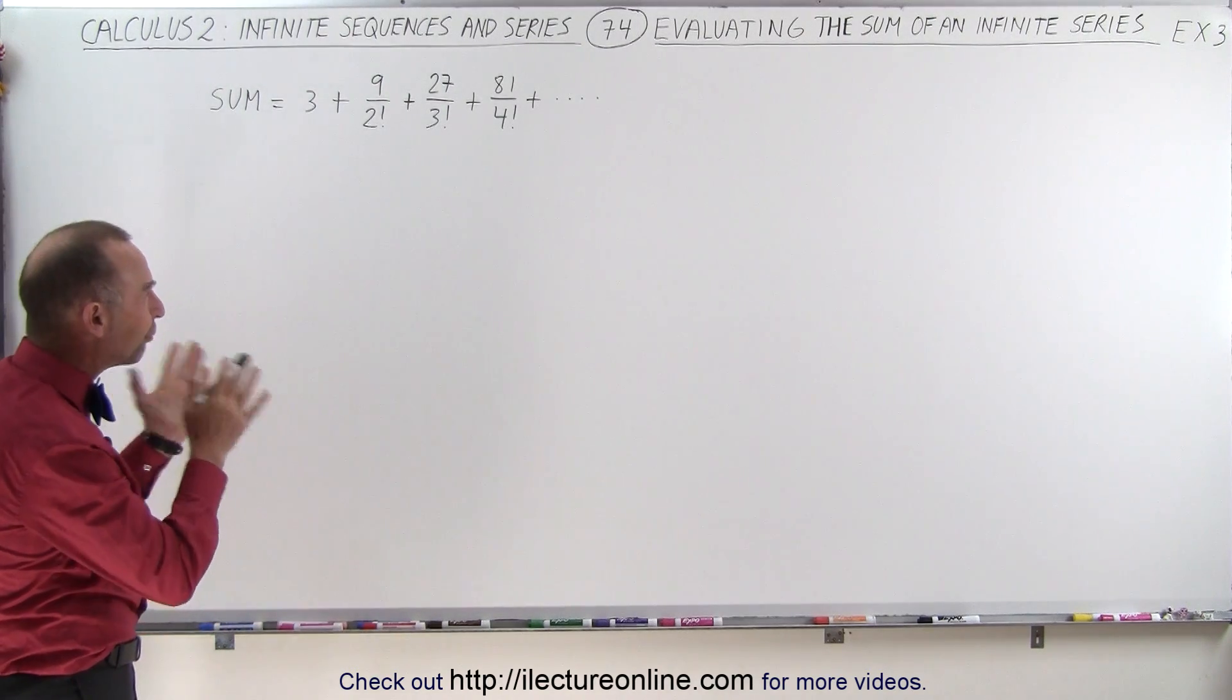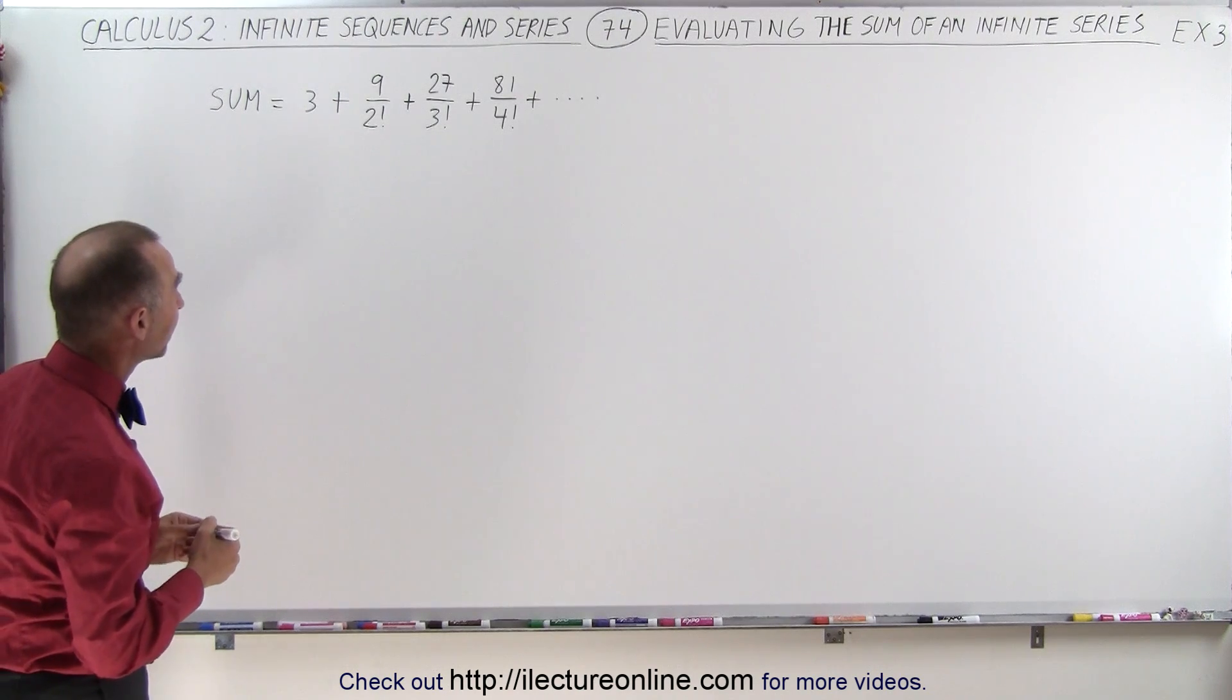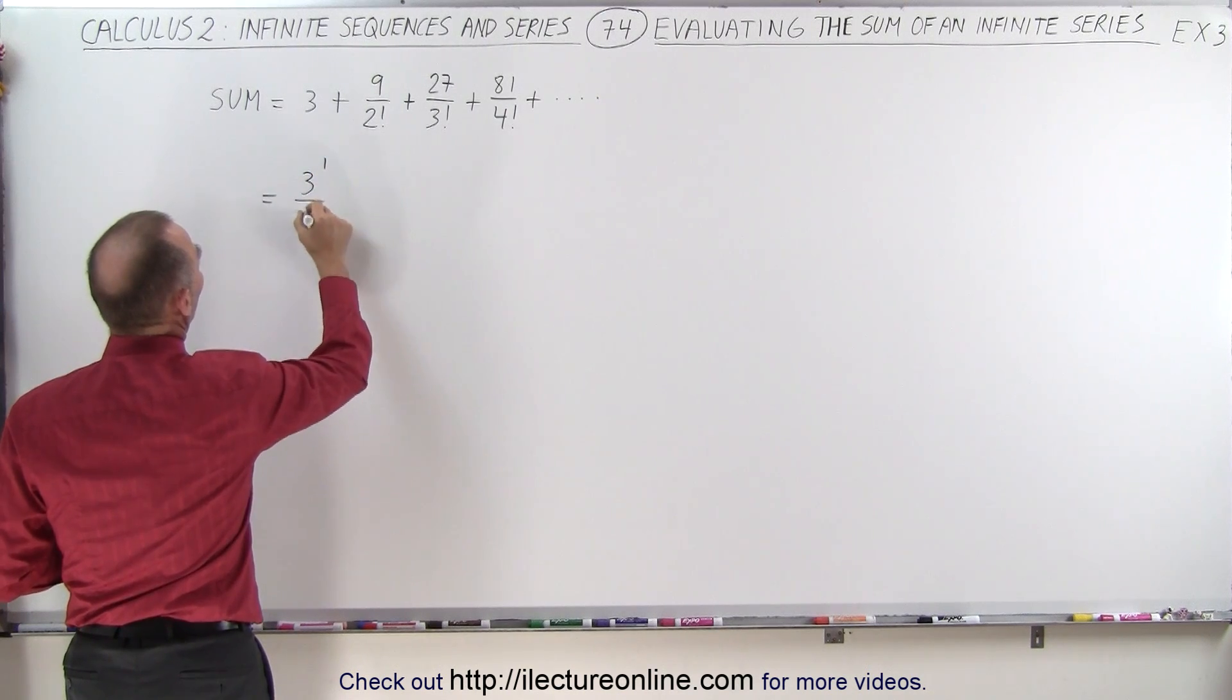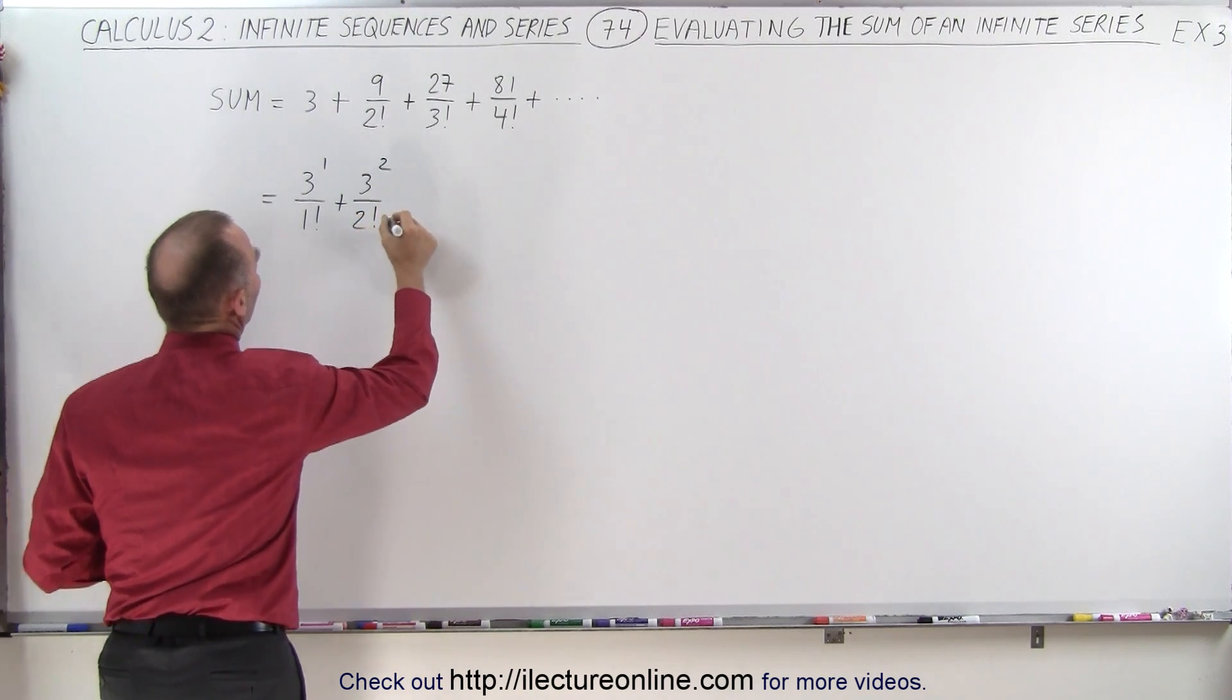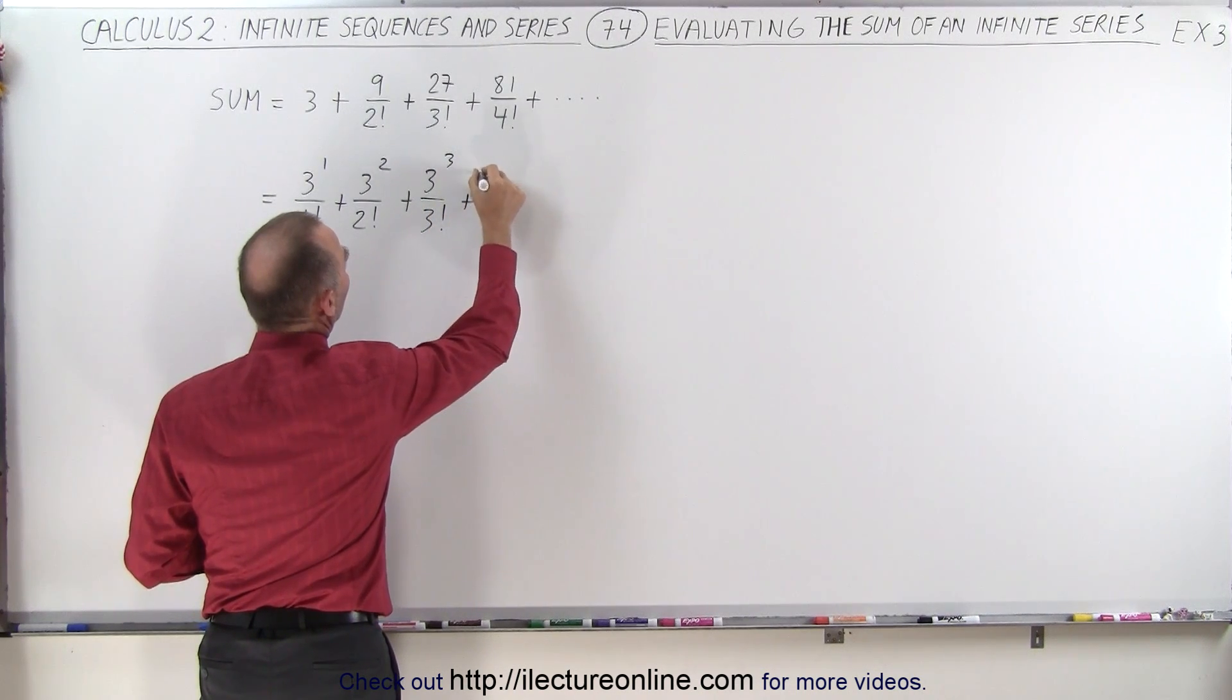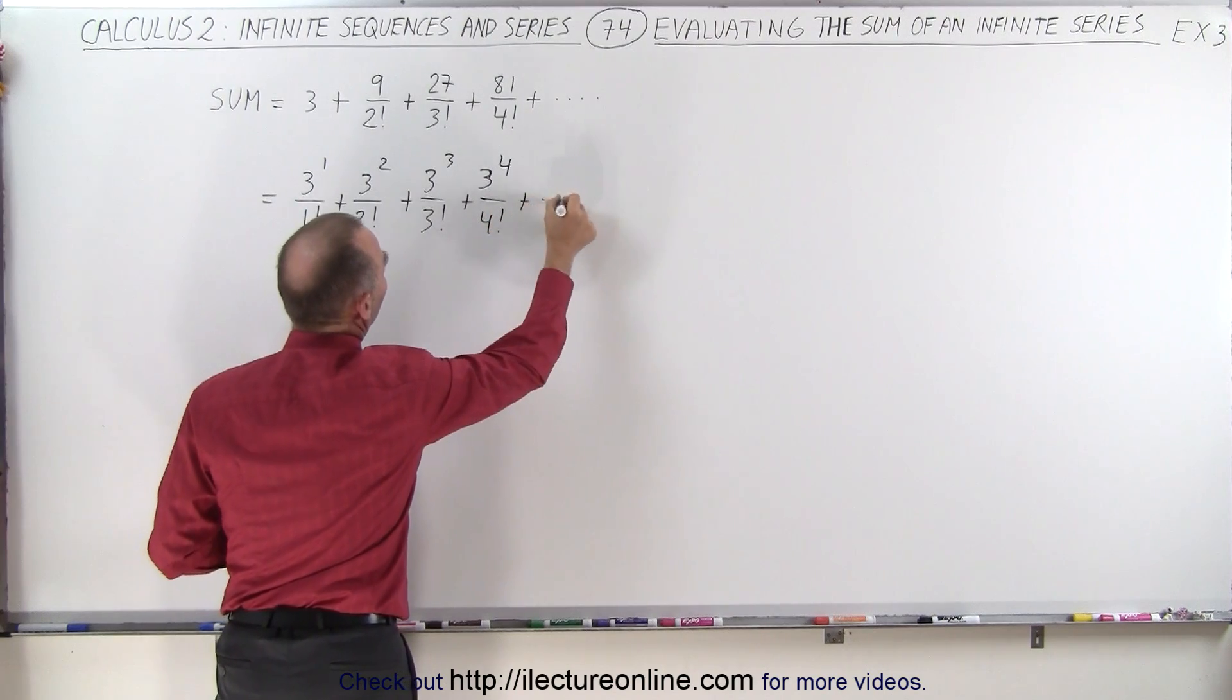So what we're going to do is write it in a format so we can compare it to a McLaurin series that we're familiar with. So let's try this. This can be written as 3 to the first power over 1 factorial plus 3 to the second power over 2 factorial plus 3 to the third power over 3 factorial plus 3 to the fourth power over 4 factorial and so forth.